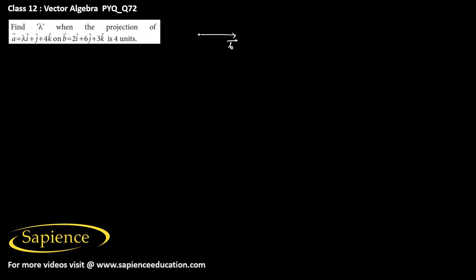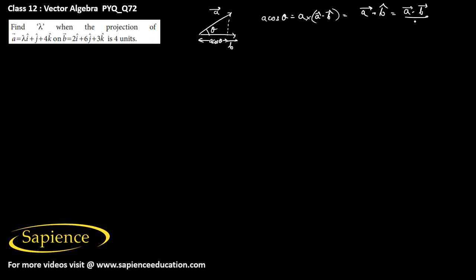We have to find the value of lambda when the projection of vector a on vector b is 4 units. If we have vector b and vector a with angle theta between them, then the projection of vector a on vector b is a cos theta. This can be written as a-vector dot b-cap, which equals a-vector dot b-vector divided by the magnitude of b-vector.